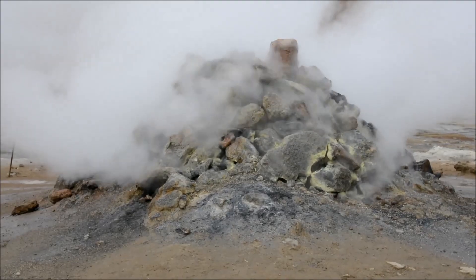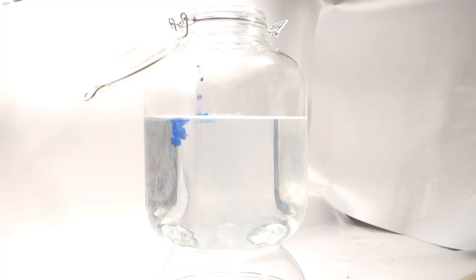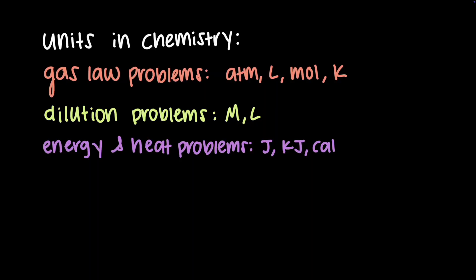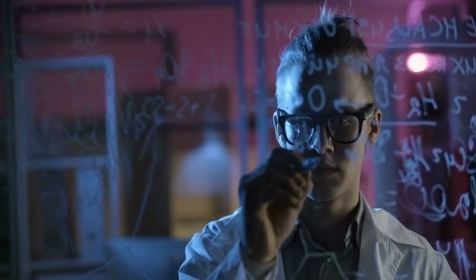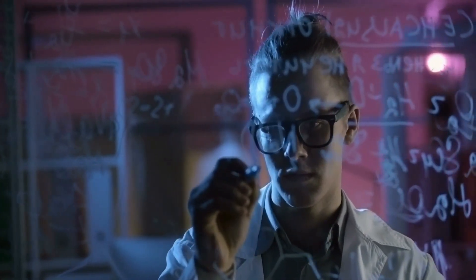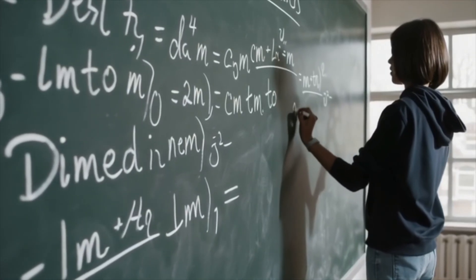The different units we see in chemistry come from gas law problems with atmospheres, liters, moles, and kelvin; dilution problems with molarity and liters; energy and heat problems with joules, kilojoules, and calories; and wavelength and frequency problems with meters, nanometers, and hertz. Because these problems involve many different units, it's essential to have a reliable method for converting between them. That's where dimensional analysis comes in.